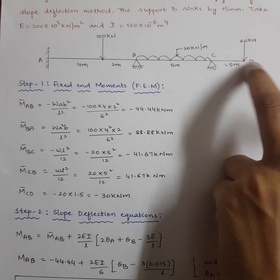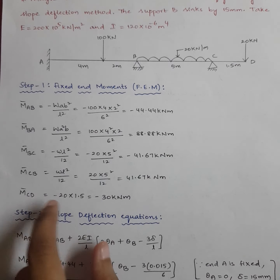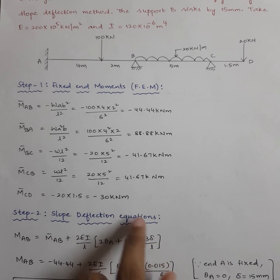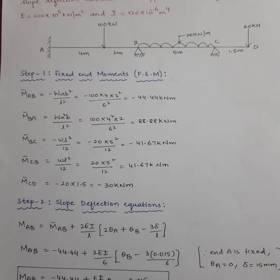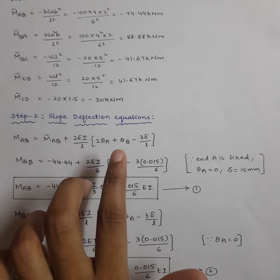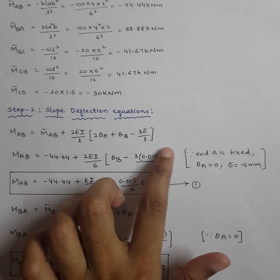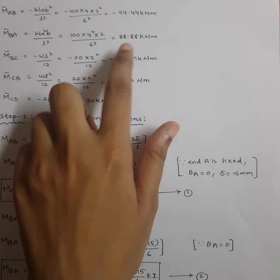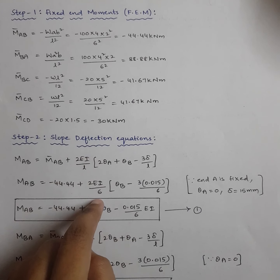Step 2 is writing the slope deflection equations. The formula is: M_AB = M̄AB + (2EI/L)(2θA + θB − 3Δ/L). For span AB: M̄AB = minus 44.44, plus 2EI/6 × (2θA + θB − 3Δ/L). θA is zero because end A is fixed. Now regarding the sign convention for the sinking support delta.